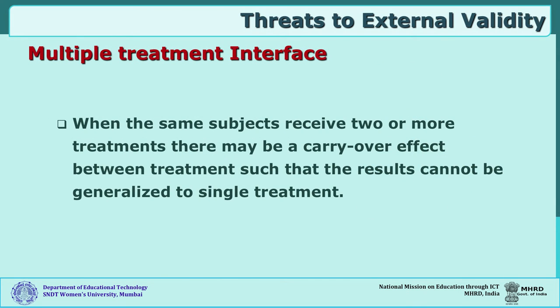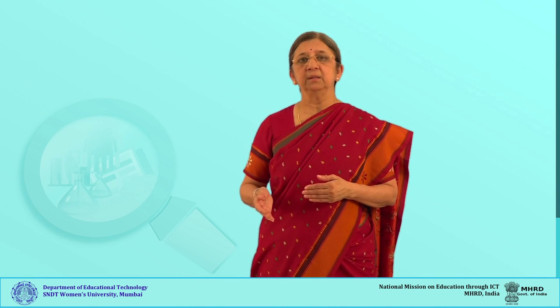One more threat to external validity is Multiple Treatment Interference. There can be two types of treatments one after the other — for example, first subjects study with the lecture method, then with cooperative methods; or in the experimental group, first cooperative methods and then lecture methods. Are these two different treatments going to affect each other? This threatens generalizability of your findings. Can you generalize results for a single method or single treatment? You cannot, because you have already used two methods — the positive results may be because of one treatment following another.